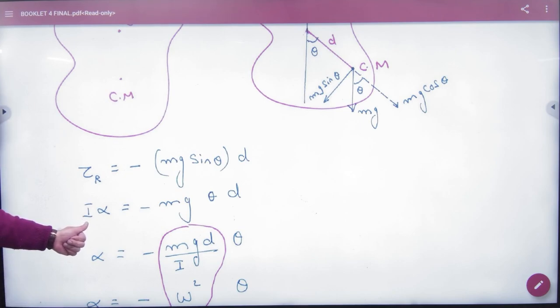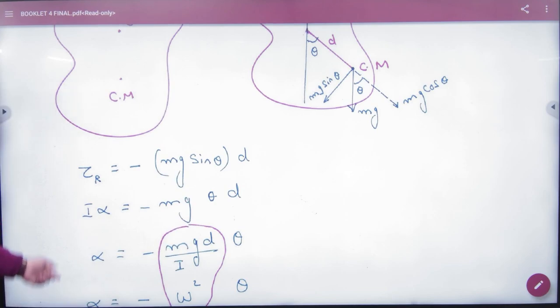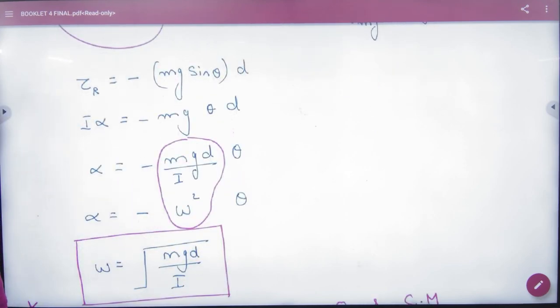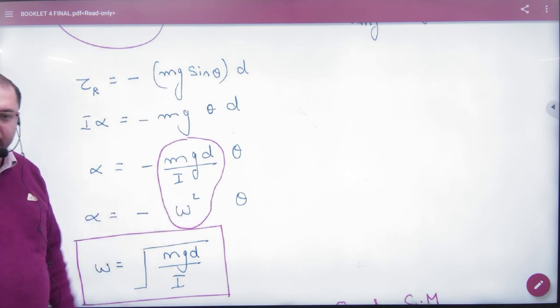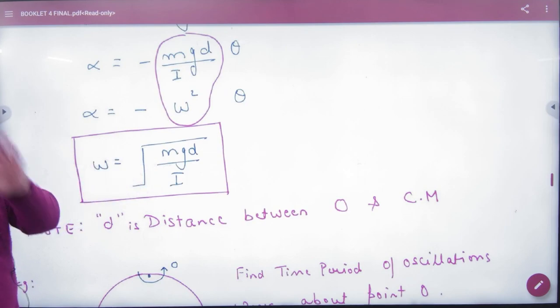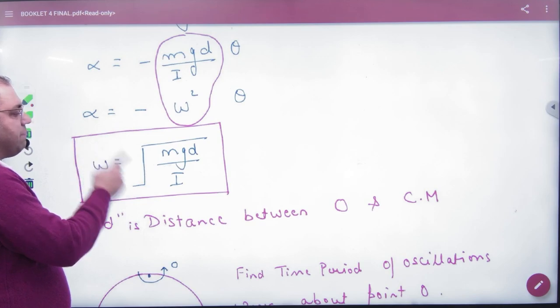Torque is I times alpha. Angle is small, so sin theta equals theta. Cross multiply and alpha... SHM proof. Angular SHM equation. Compare it. What will happen? Omega. Write the formula in the booklet. First write this formula for physical pendulum. Omega.